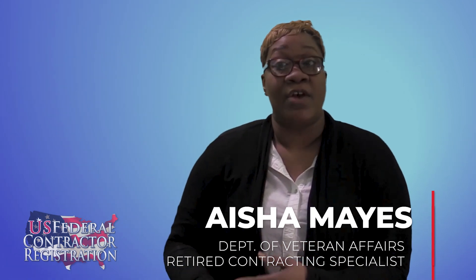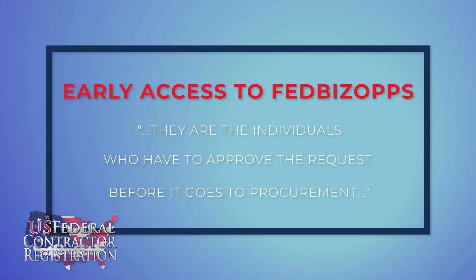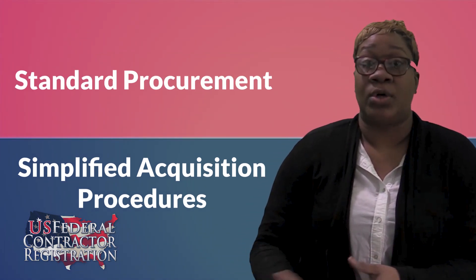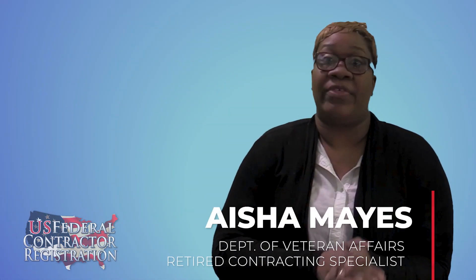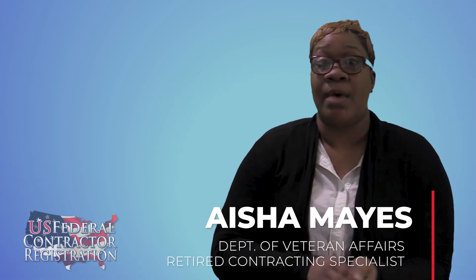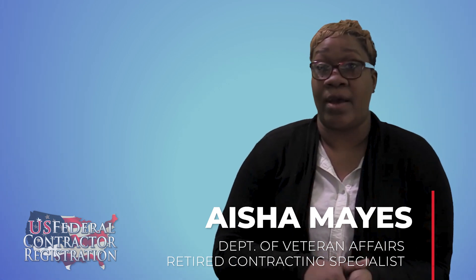You would reach out to them, and while they may not be the individual submitting the request for a specific service or product, they are the individuals who have to approve the request before it goes to procurement — whether that be procurements under $2,500–$3,000 or procurements going into the contracting office. Having that rapport built with the end user is imperative, and you would find exactly who that end user is by looking at the points of contact for the different departments within the local clinic or VA hospital.